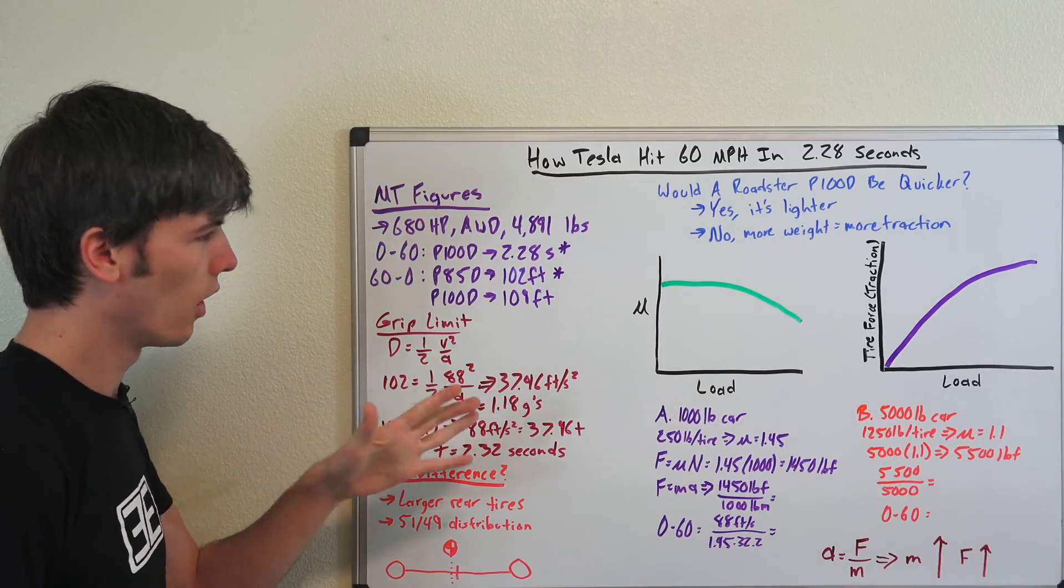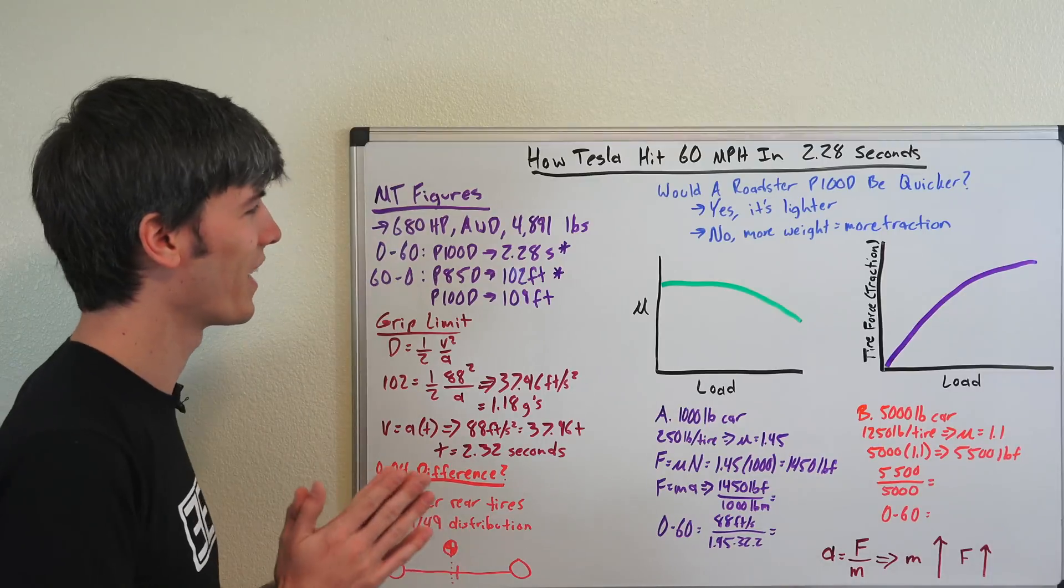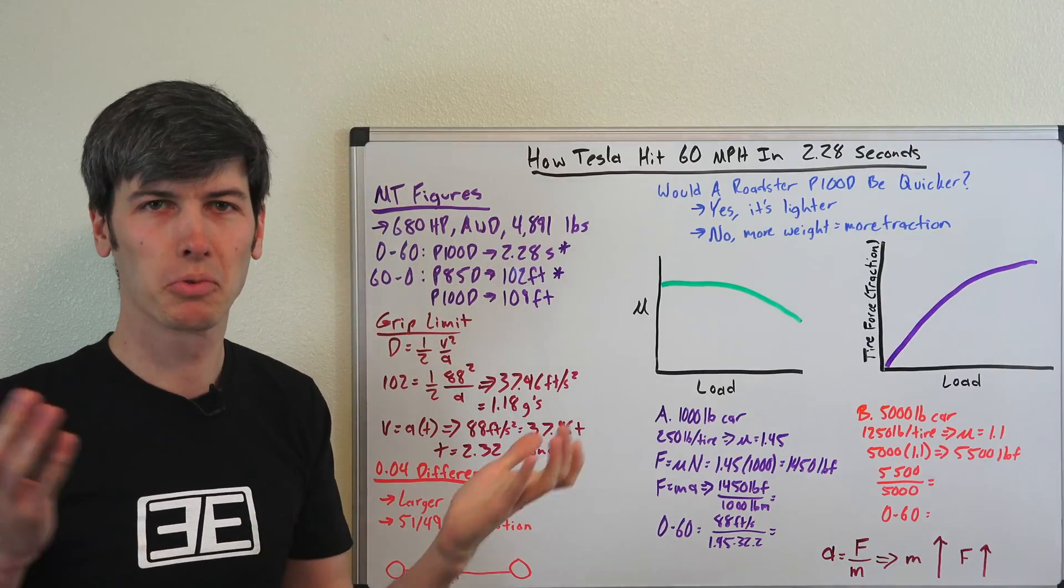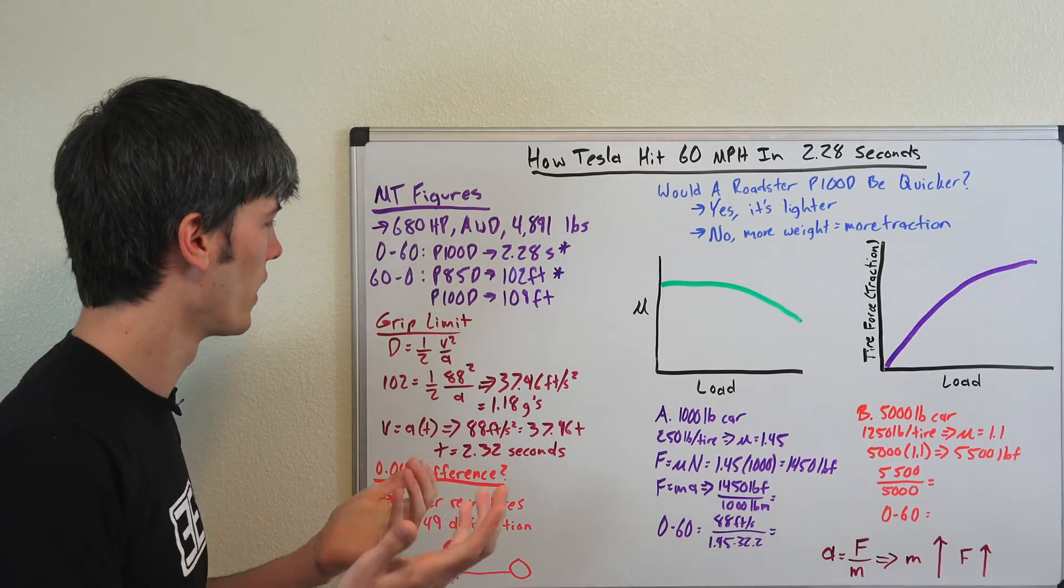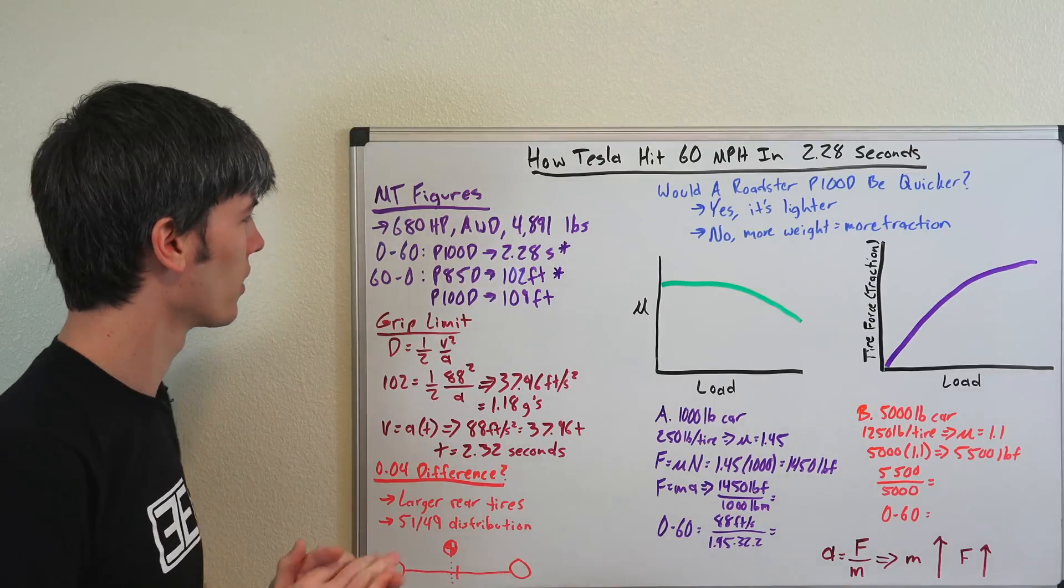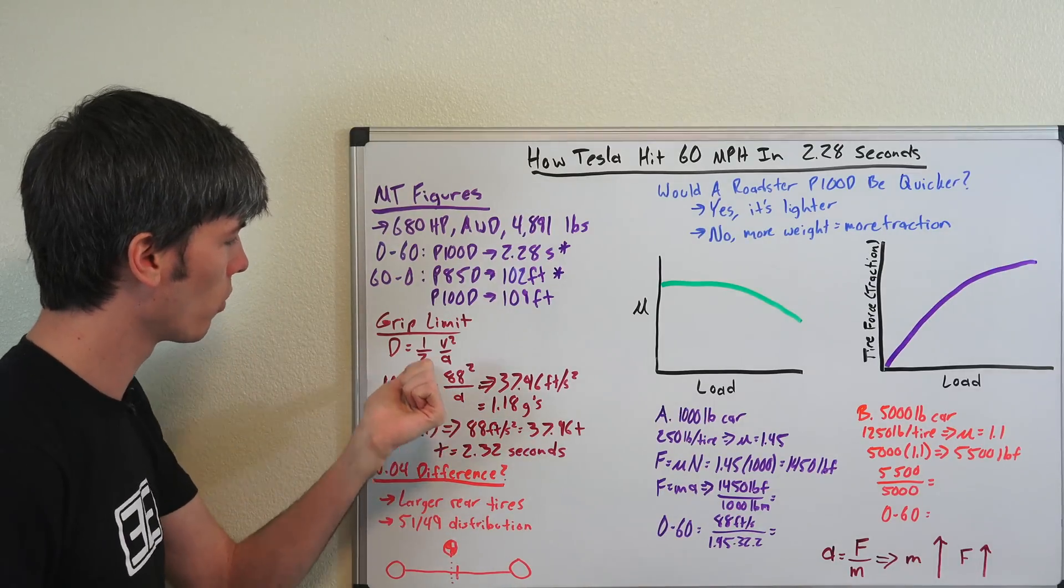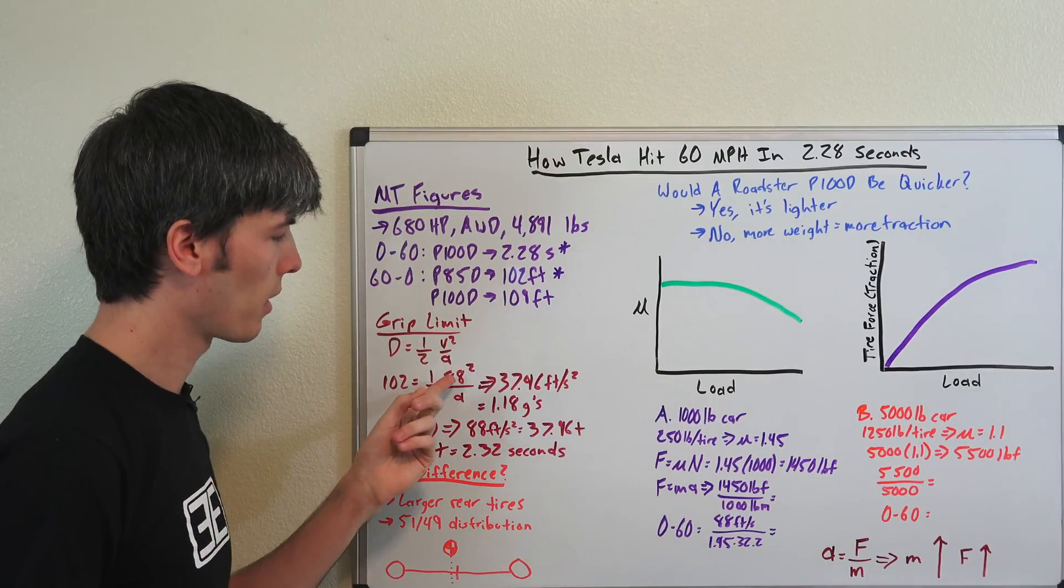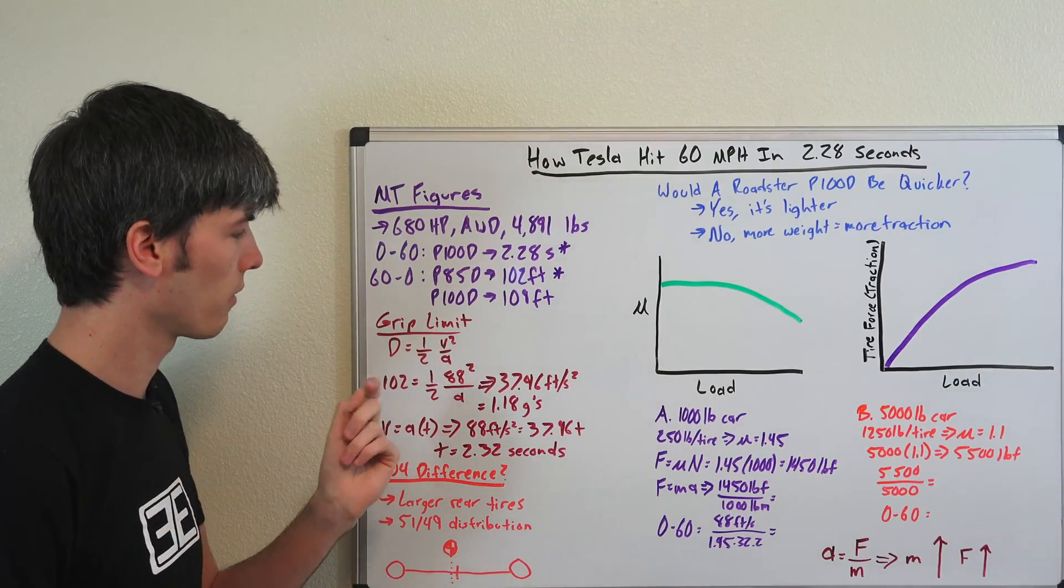So 102. Oh, and you're going to be angry about units, I already know that. Apologies, these are units straight from Motor Trend. Maybe write them a letter and tell them to switch their magazine to metric units if you don't like that. Anyways, these are the units that they use so I'm going to continue to use them. 102 equals 1 half 88 squared. 88 is feet per second. That's 60 miles per hour converted to feet per second.